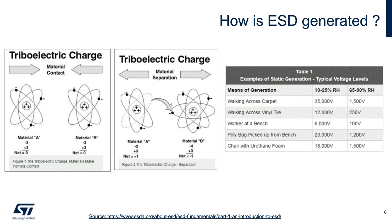Here are some examples of voltage levels. For instance, walking across a carpet is the worst case, generating up to 35 kilovolts. Discharging that amount into integrated circuits is not without risk.